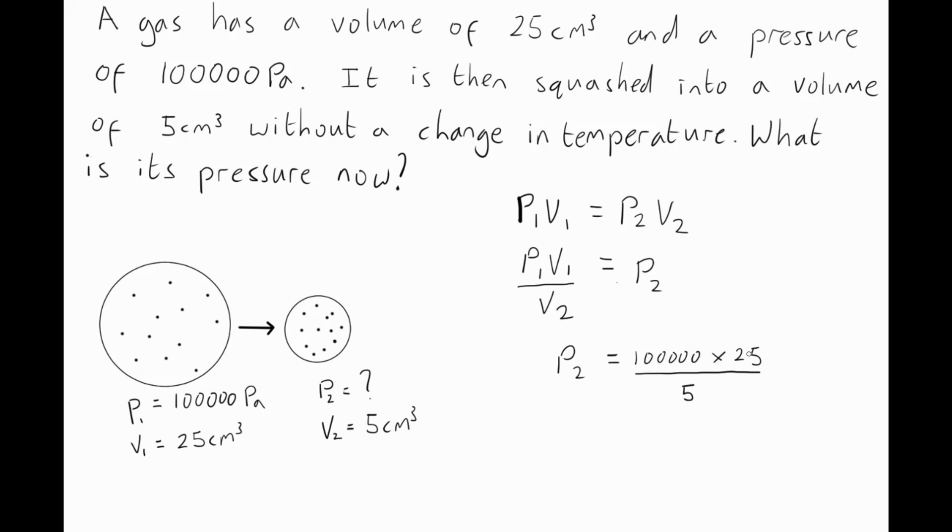If you look at this, you can see that we've got 25 divided by 5 here. So, why not just cancel that and write 5 here, because multiplying by 25 and dividing by 5 is obviously the same as multiplying by 5. It keeps the maths easy. You don't have to use a calculator then. So, we've got 100,000 times 5 which is obviously 500,000 pascals. The answer to the question is the pressure in situation 2 is 500,000 pascals.